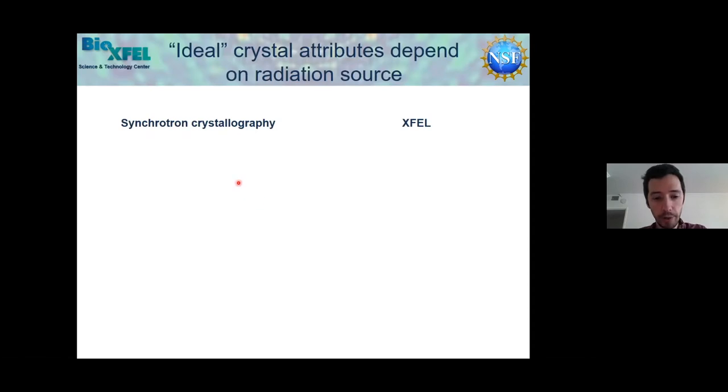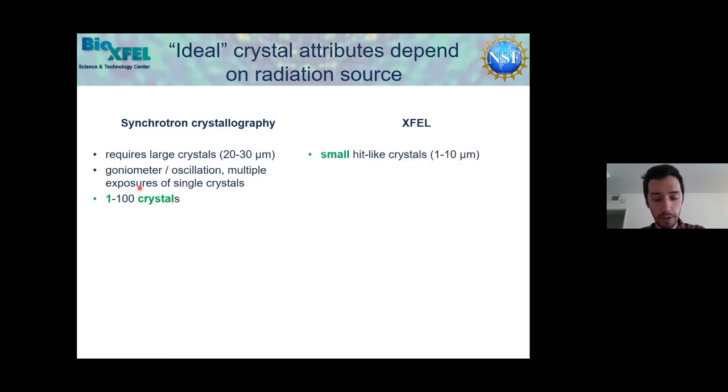Ideal crystal properties depend on the radiation source we want to use. For synchrotron, we require relatively large crystals, meaning 20 to 30 microns or more, and we collect data under cryogenic conditions from a single or a few crystals. For XFEL, we use small crystals, such as those often found as initial hits in crystallization screens. They can be one micron or smaller, and we collect data from a continuous supply of tens of thousands of crystals at room temperature without radiation damage and no crystal harvesting in the traditional sense is required.